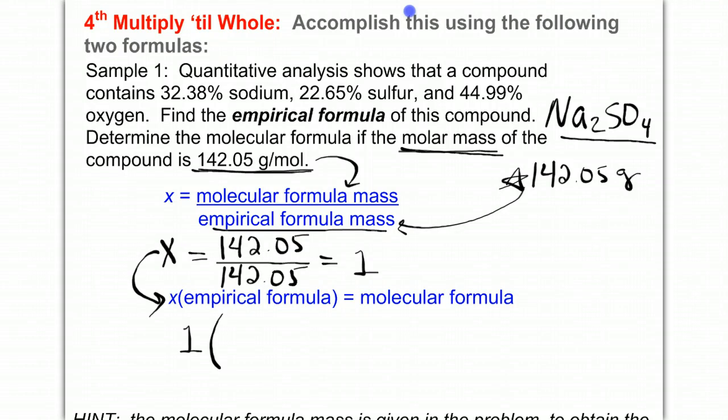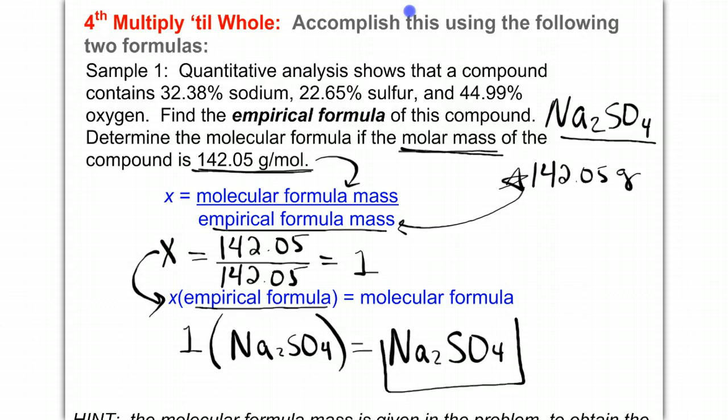This should always end up being a whole number. That's going to be my x. I'm going to take one and multiply it to my empirical formula, Na2SO4. If you multiply everything by one, it just remains the same. So in this case, our molecular formula and empirical formula end up being identical.